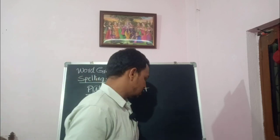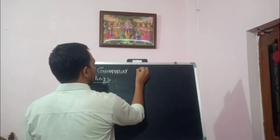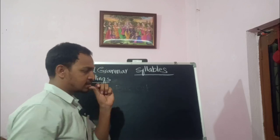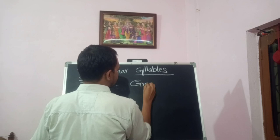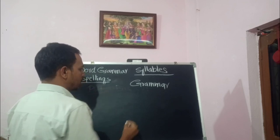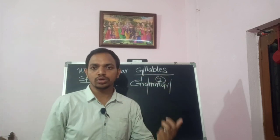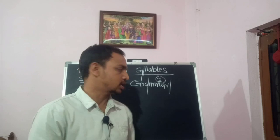In this video we are going to learn syllables. Based on syllables only we can learn spellings correctly. Syllables are nothing but the parts into which a word is divided. For example, the word 'grammar' is divided into two parts: gram-mar — one syllable, two syllables. We have monosyllable, disyllable, trisyllable, and multisyllable — different kinds of syllables.